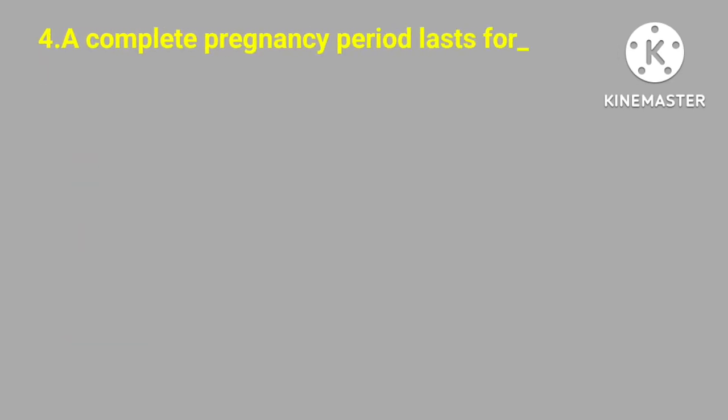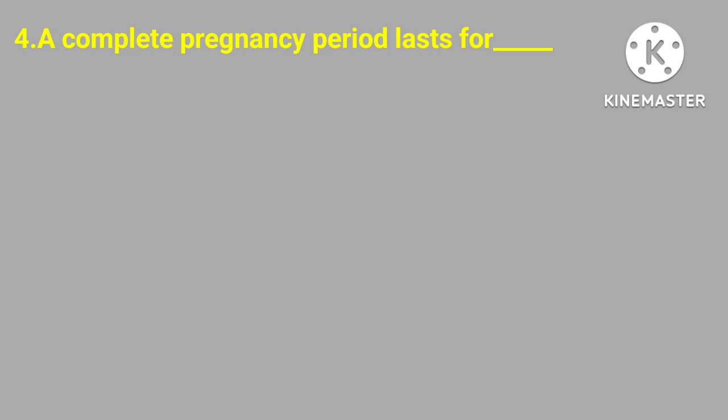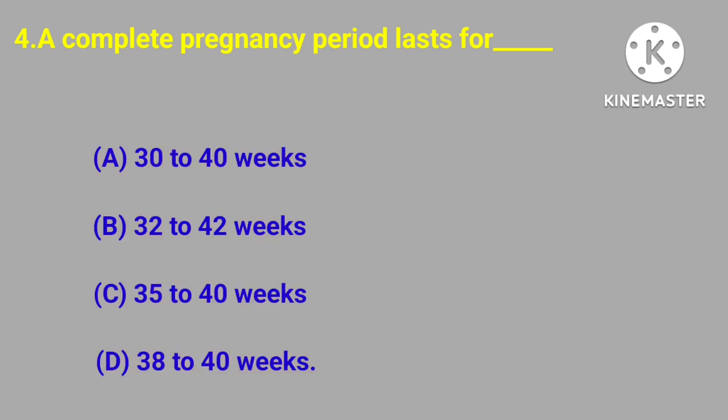Question number four. A complete pregnancy period lasts for: thirty to forty weeks, thirty-two to forty-two, thirty-five to forty, thirty-eight to forty weeks. Correct answer is thirty-eight to forty weeks.